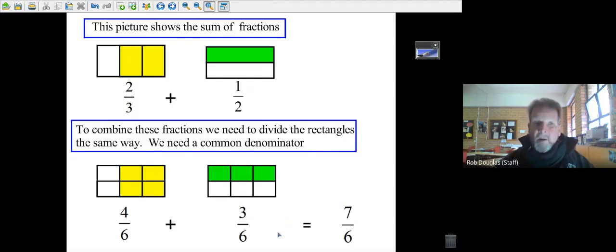People memorize what to do but don't always understand why it works. There's a quick way: the product of these two denominators gives you the common denominator of six. If you cross multiply, two times two gives you four, and three times one gives you three, then you add them up.